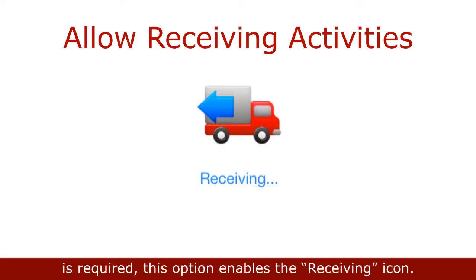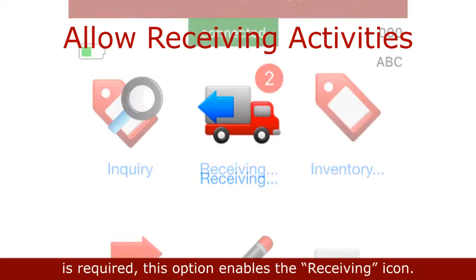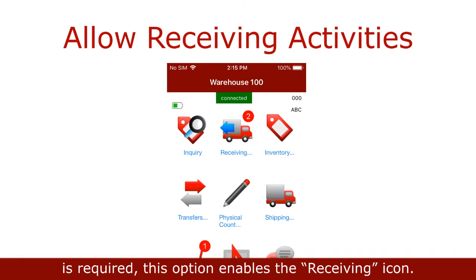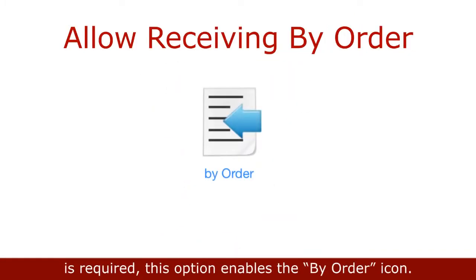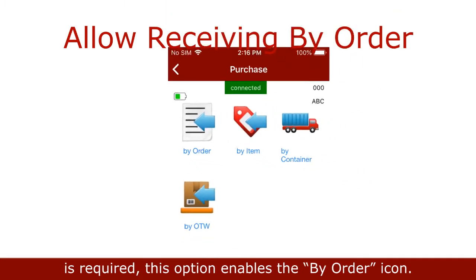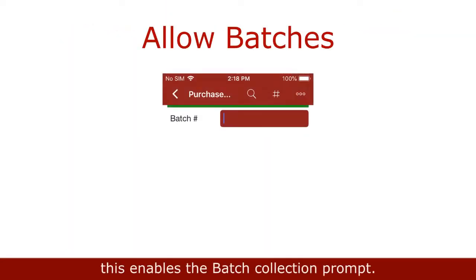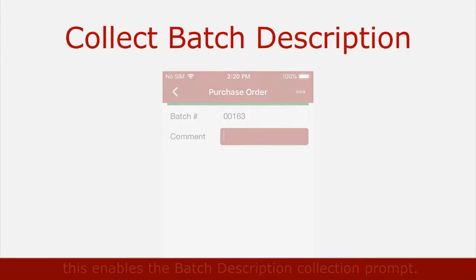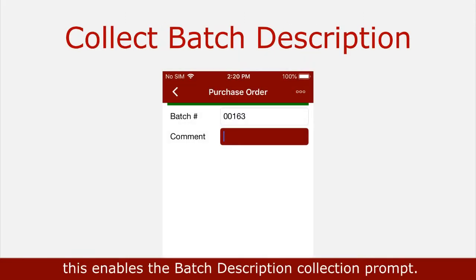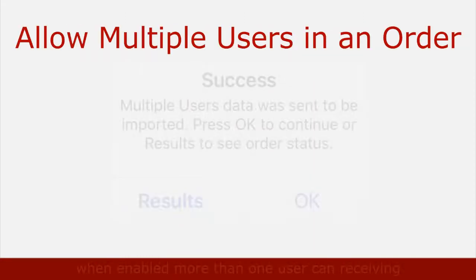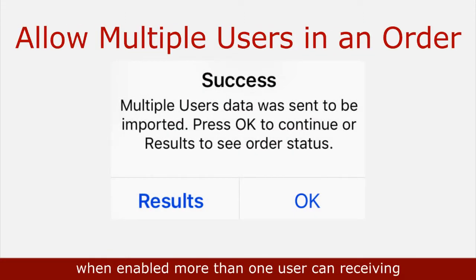Now we will review the options. Allow receiving activities is required — this option enables the receiving icon. Allow receiving by order is required — this enables the by order icon. Allow batches enables the batch collection prompt. Collect batch description enables the batch comment collection option prompt.